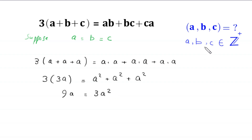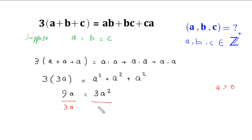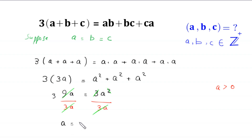Since a, b, and c are positive integers, a is greater than 0, so we can divide both sides by 3a. The left-hand side gives 3, and the right-hand side gives a. So from here we get the value of a is equal to 3.